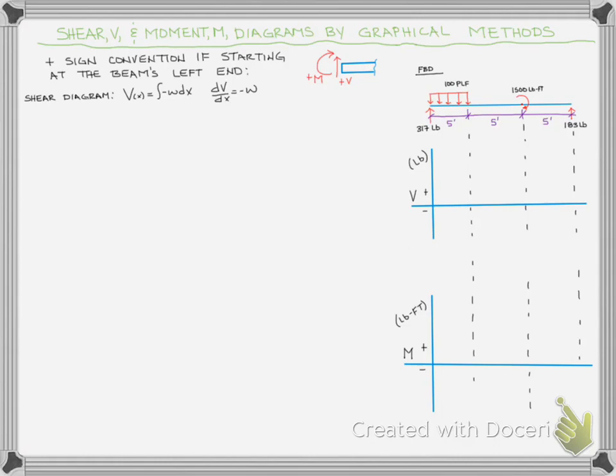Starting on the left side, the very first thing we have is our 317 pounds. Point loads cause a jump, so we're going to have a jump upward, because we said that positive shear is upward — a positive arrow is upwards.